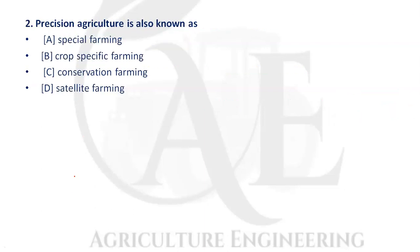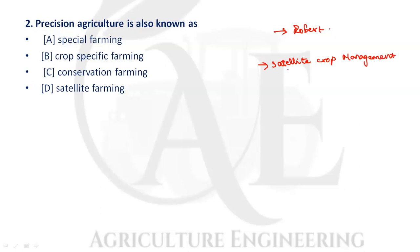Next question: precision agriculture is also known as what? Precision agriculture was founded by Robert. Precision agriculture is also known as satellite crop management or site-specific crop management. Here the option given is satellite farming, so option D is the correct answer.